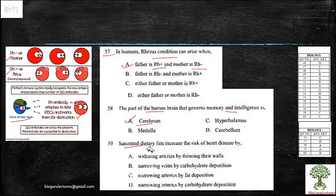Next is saturated dietary fibers increase the risk of heart diseases by. You know here the answer is C because of the fat depositions. Fat depositions are going to block or decrease the size of the arteries which is going to lead to heart attack as well.